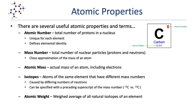Isotopes are different atoms of the same element that have different mass numbers, caused by a differing number of neutrons. Remember, the number of protons — the atomic number — defines the actual element, so the only way we can change the mass number is by altering the number of neutrons. We can specify which isotope we're dealing with by including the mass number as a prefix before the elemental symbol — for example, carbon-12 and carbon-13. The last term is atomic weight, which is a weighted average of all the natural isotopes of an element, usually represented on the periodic table. For carbon, the atomic weight is 12.011.